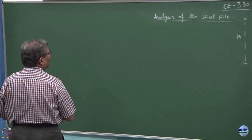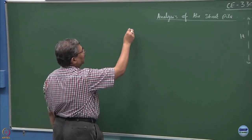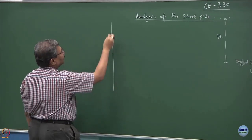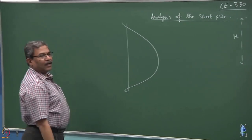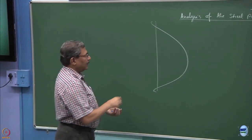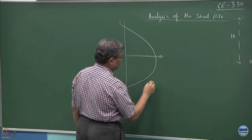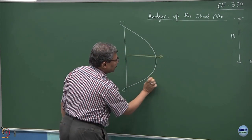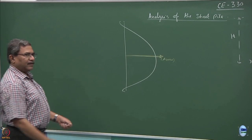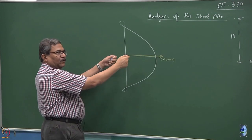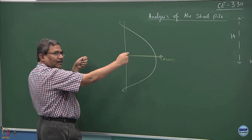You must have seen the bow and arrows. A typical bow will look like this and then somewhere here would be the arrow. What normally we will do, we will try to pull it back. What is happening to the bow? It deflects, correct, inside.